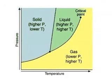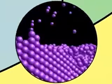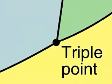The second important feature occurs at the junction of the three phase boundary lines. At this point, called the triple point, the three phases are in equilibrium simultaneously.